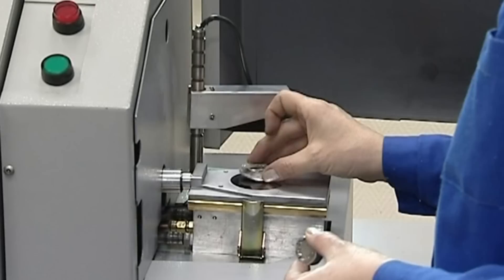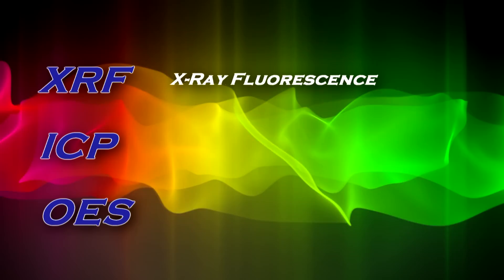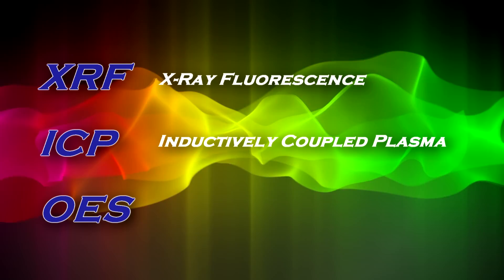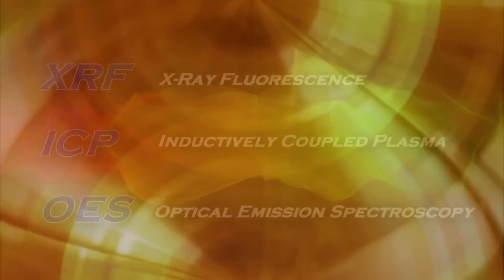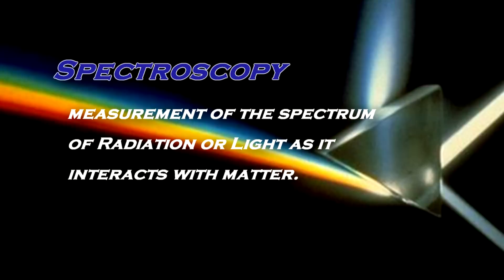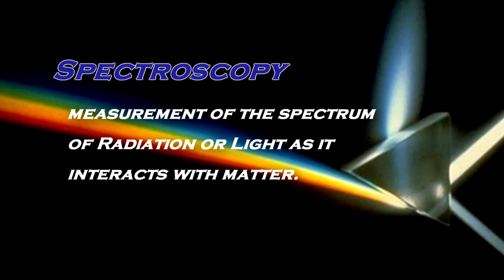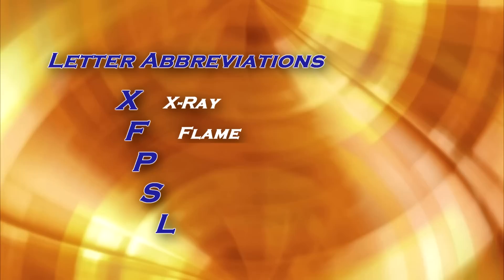XRF means X-ray fluorescence, ICP means inductively coupled plasma, and OES means optical emission spectroscopy, to name just a few. These techniques utilize different forms of spectroscopy, which is the measurement of the spectrum of radiation or light emitted from materials when they are energized or excited by an energy source. The letters provide the abbreviation of which method is used to excite the sample: X-ray, flame, plasma, electric arc, or laser.